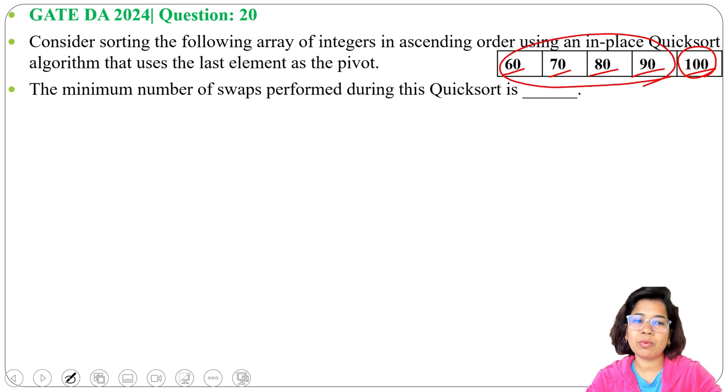Next time 90 will be the pivot, and 90 is already in place, so we don't need any swap. Then 60, 70, 80 will be in one partition, and 90 will be another partition.